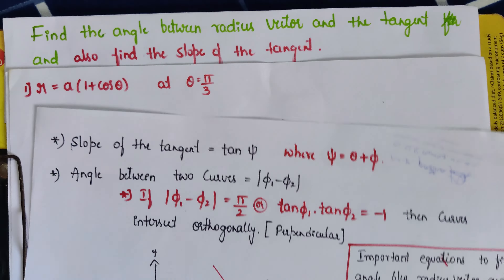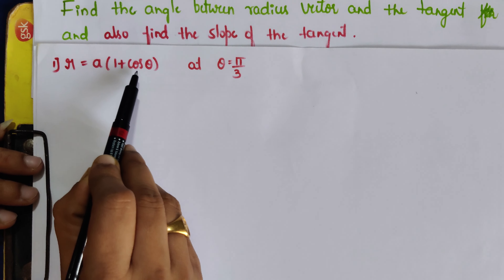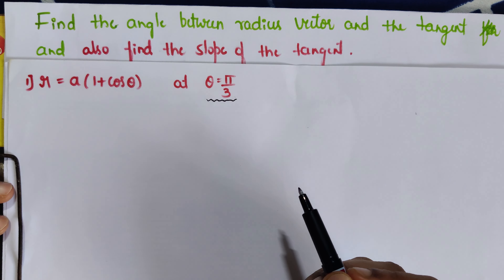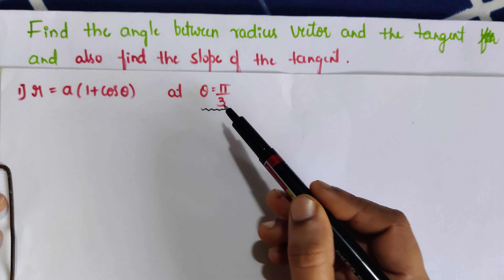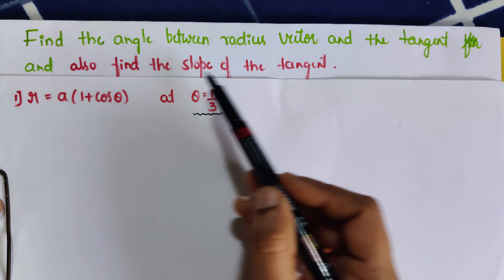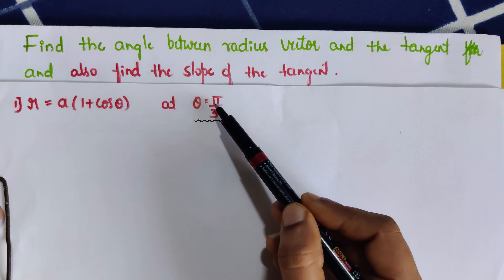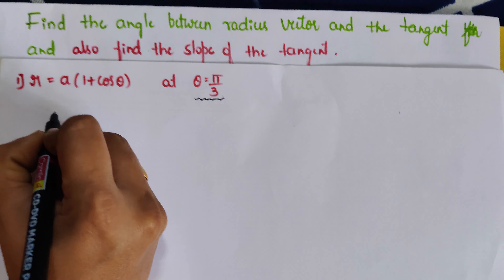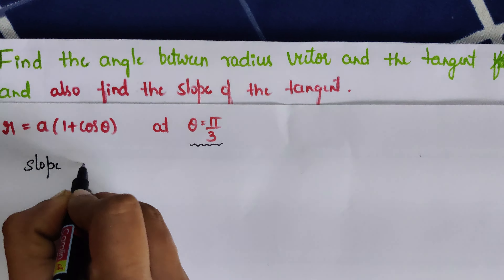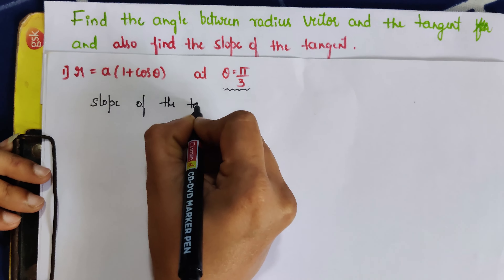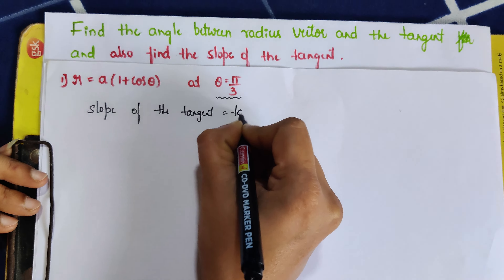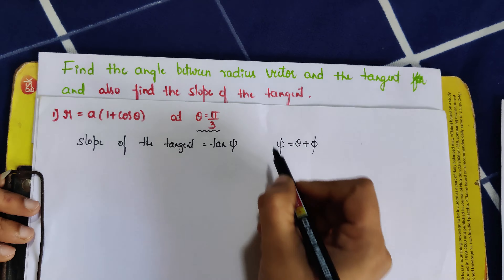The first question is r equals a(1 + cosθ). Here, please observe we have θ in the question itself. The θ value will be given in the question in order to find the slope of the tangent. So θ equals π/3 is given. First I need to write the formula: slope of the tangent equals tan(ξ). We have to find ξ using the formula θ + φ.